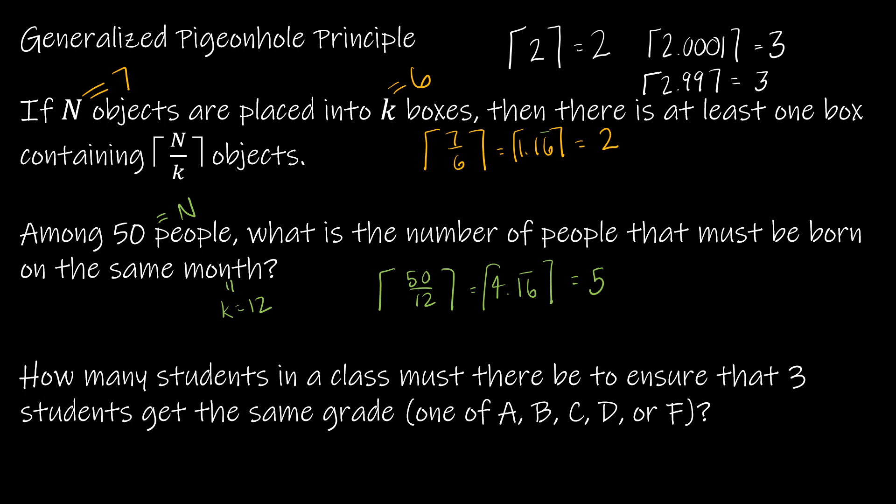How many students in a class must there be to ensure that three students get the same grade of A, B, C, D, or F? So hopefully we can see that this would be the boxes. We're trying to put people into the boxes of which grade they get. This is going to be the outcome. So if I were to set this up, it would look like n divided by 5 is equal to 3.